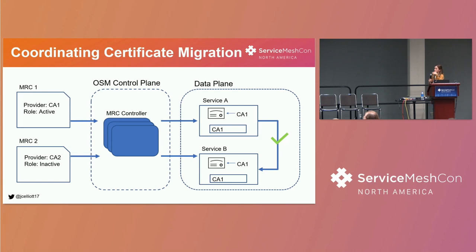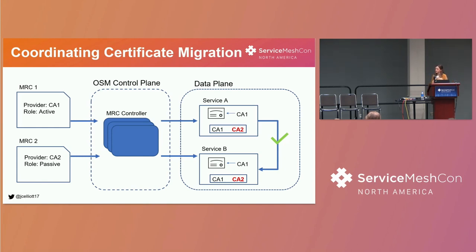Notice as we move through this rotation that the green checkmark remains throughout, indicating that the connection between workload A and workload B is never disrupted. To initiate the rotation process from CA1 to CA2, the operator updated the intent from inactive to passive with a simple kubectl apply command. The update is picked up by the MRC controller, which inspects the state of MRC1 and MRC2. Since MRC2 is in a passive state, CA2 will be added to the validation context of both workloads. The MRC controller takes on the responsibility of updating these validation contexts in the mesh and updating Envoy, which is our sidecar, without any downtime.